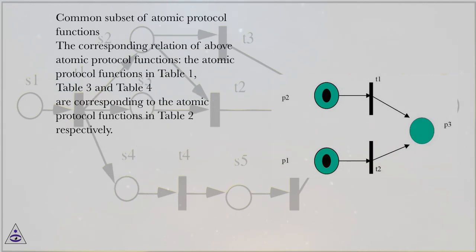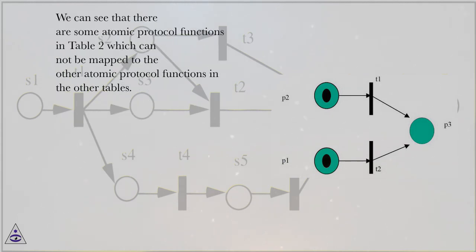Common Subset of Atomic Protocol Functions. The corresponding relation of the above atomic protocol functions shows that the atomic protocol functions in Table 1, Table 3, and Table 4 correspond to the atomic protocol functions in Table 2 respectively. We can see that there are some atomic protocol functions in Table 2 which cannot be mapped to the atomic protocol functions in the other tables.